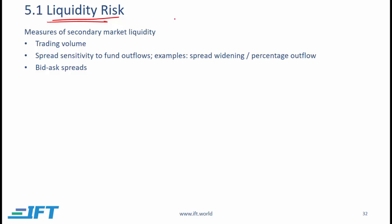We need measures for secondary market liquidity. The three major measures are trading volume, spread sensitivity to fund outflows, and the bid-ask spread. The higher the trading volume, the higher the liquidity. In several large markets, trading volume has trended downwards, which implies that the liquidity of credit markets has gone down over the last few years.